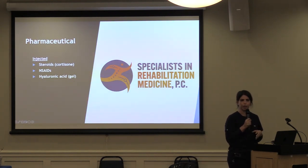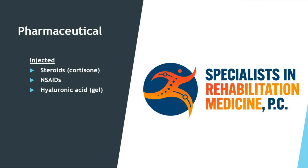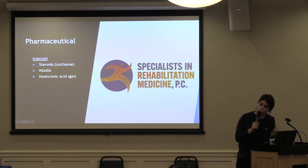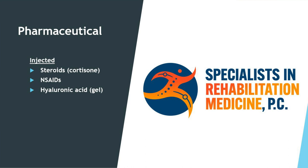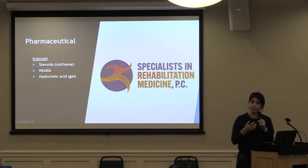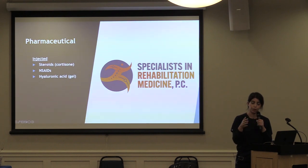Injectable medications include epidurals and cortisone shots for radicular pain—back pain shooting into the leg or neck pain into the arm. NSAIDs can also be injected. Hyaluronic acid is a gel injection that acts as a lubricant; as our joints wear down with arthritis over time, the fluid decreases—especially in the knee and sometimes the hip. This synthetic gel, similar to what our body makes, can help with joint pain.